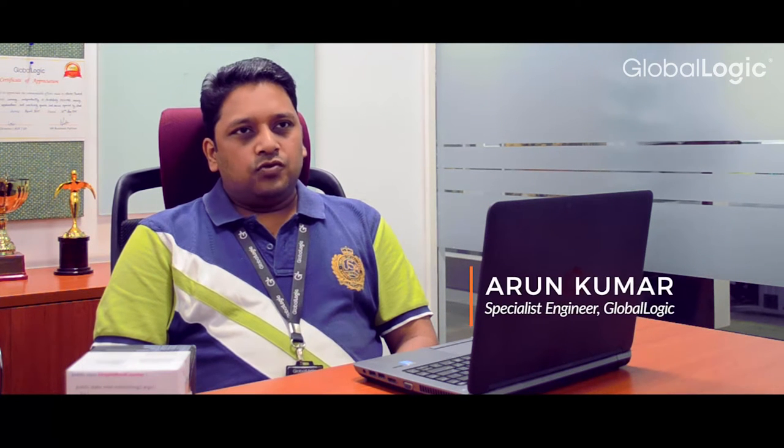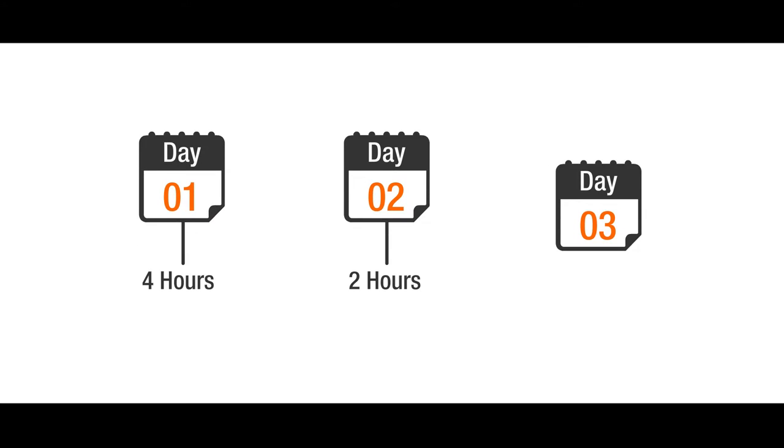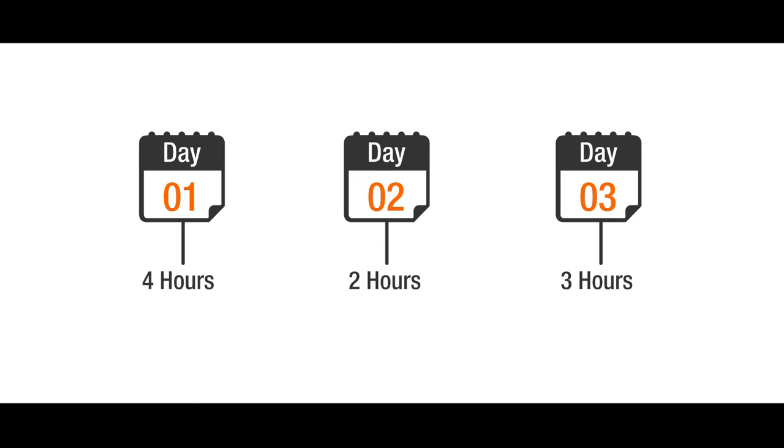Before starting to work on a particular story, we estimate it and put in our estimates in that Jira item. And after that, when a person starts working on a particular story, he puts in the time that he has spent on that story every day. So that gives us a pretty good feeling as to whether we are on track or not.